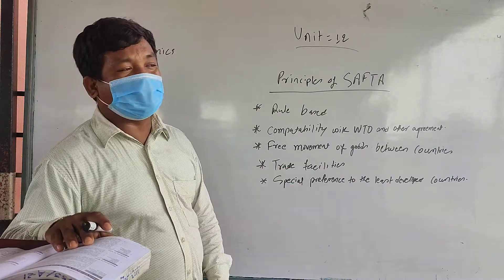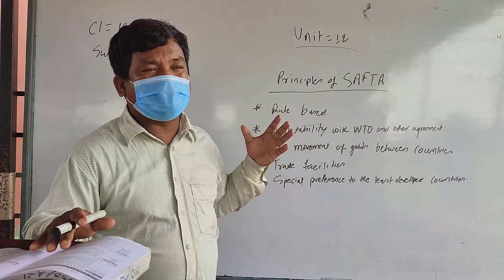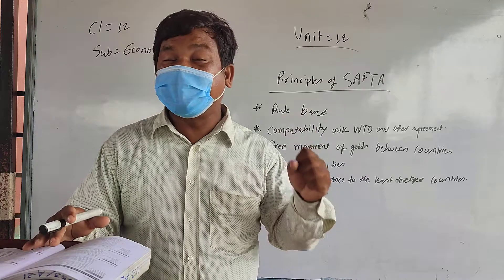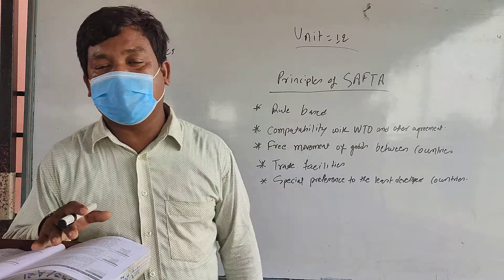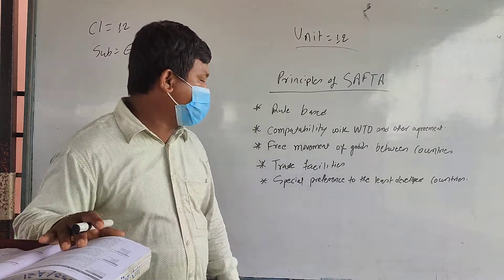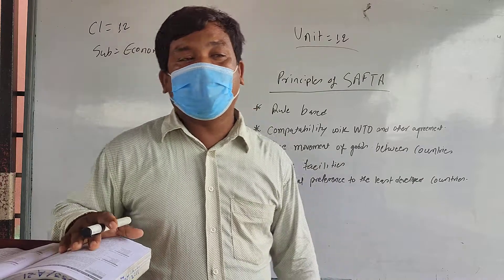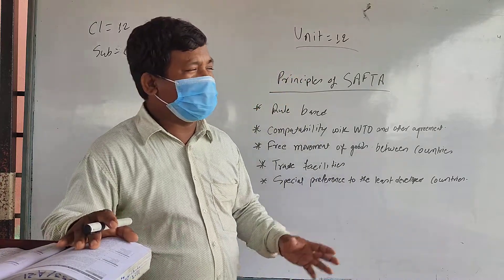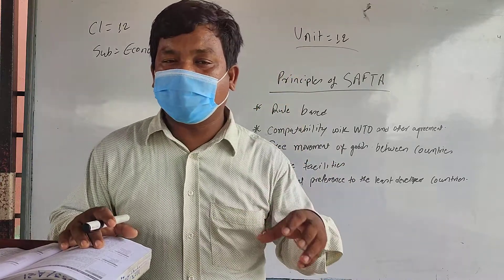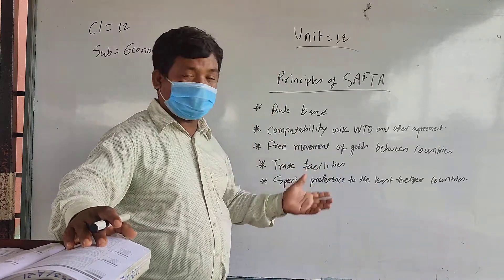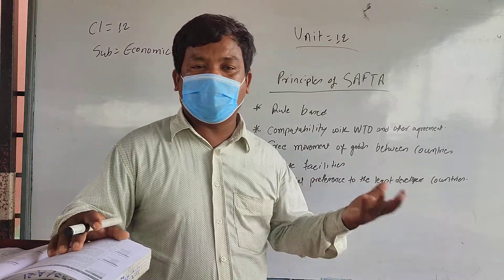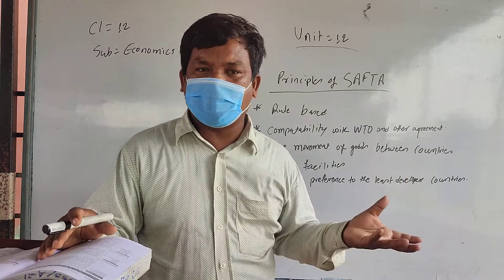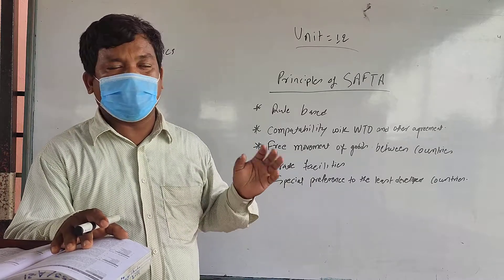Number four is trade facilitation. SAFTA has the same objectives as WTO — to facilitate trade among SAARC nations. SAFTA has played an important role to facilitate trade among the SAARC nations. Among those nations, there should be regulation of the flow of goods and services. If any difficulties arise, SAFTA processes further resolution of such difficulties or further tracking of negotiations. So any trade problems that arise can be solved through this process.